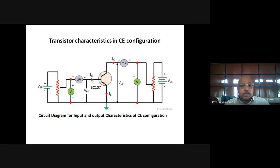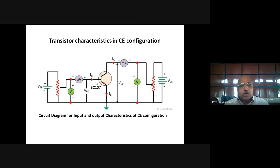For the NPN transistor to conduct, the base-emitter junction must be forward biased. Forward biasing requires only a small voltage, since the base-emitter junction conducts when VBE is greater than the cut-in voltage. For a silicon transistor, that cut-in voltage is 0.7 volts. On the collector-emitter side, because it is a reverse biased junction, a larger voltage must be applied as the reverse bias voltage.